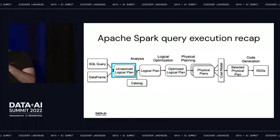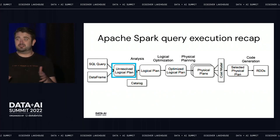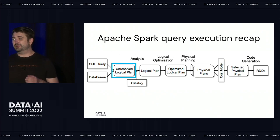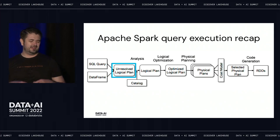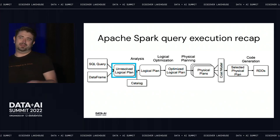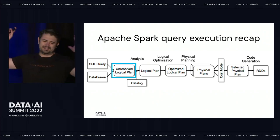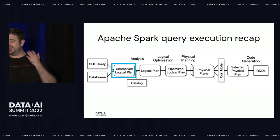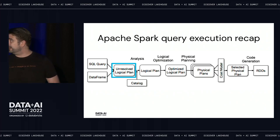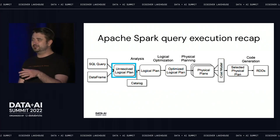If you know Apache Spark, you know there are many different stages of query execution. We start with a SQL query or data frames. Then we create the unresolved logical plan. Then we get the resolved logical plan, then the optimized logical plan. Then we have multiple different physical plans, and then the executed physical plan. And then we get the results. We were working at the level of the unresolved logical plan. So this is a hardcore talk.